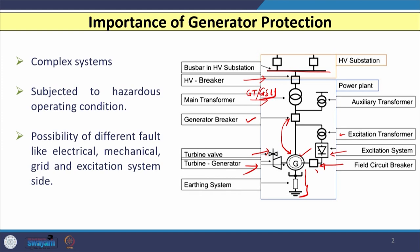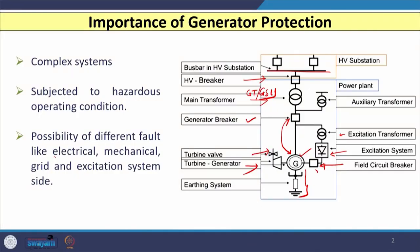When we consider this generator, which contains stator, rotor, excitation system, and turbine or prime mover, all these components are subjected to various abnormal conditions and faults. There are fair chances of internal faults inside the winding or core of the generator — faults inside the stator, turn-to-turn faults, and faults inside the rotor. Electrical faults are very common in the generator. Mechanical faults are also possible.